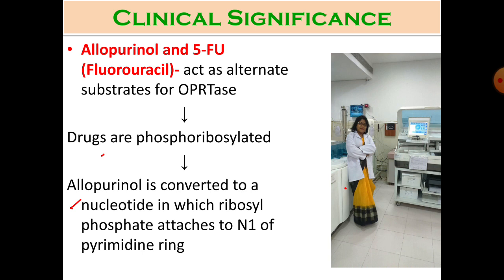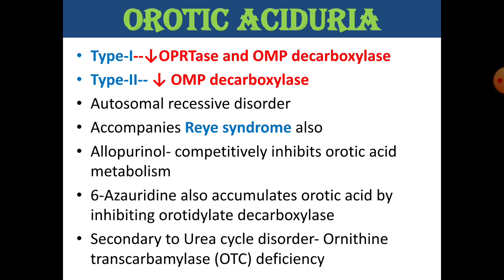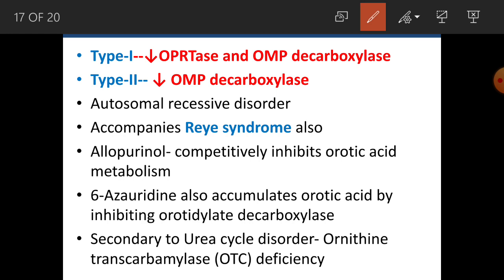The main clinical syndrome related to pyrimidine synthesis is orotic aciduria, of two types. Type 1 involves deficiency of both OPRT and OMP decarboxylase; Type 2 involves only OMP decarboxylase deficiency. These are autosomal recessive disorders and can also be seen secondarily in Reye's syndrome.